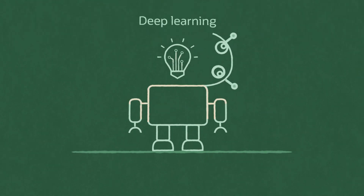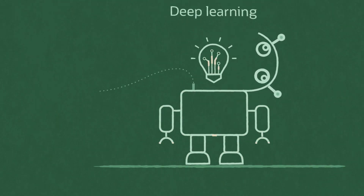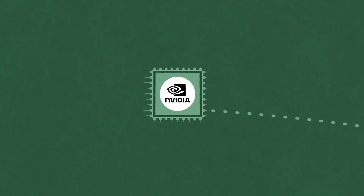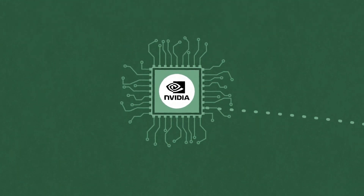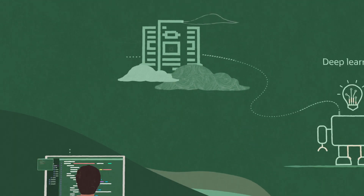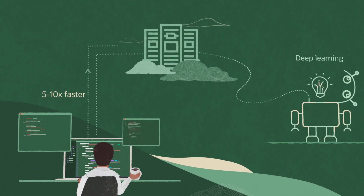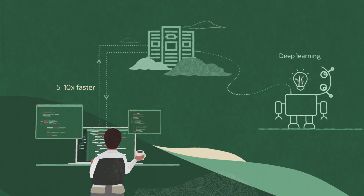For deep learning, build and train your models using NVIDIA GPUs in notebook sessions. This makes performance 5 to 10 times faster compared to using CPUs.